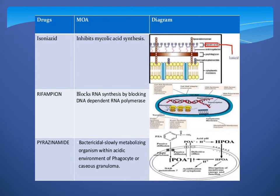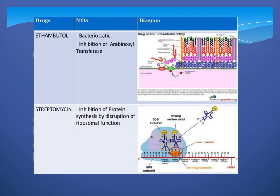Here you can see the mechanism of action of drugs. The mechanism of action of isoniazid is very important — in MCQs you will get this. Isoniazid inhibits mycolic acid synthesis. Rifampicin blocks RNA synthesis. Ethambutol inhibits arabinosyl transferase. Streptomycin inhibits protein synthesis. Mechanism of action is important — only one line for each — you have to remember this.